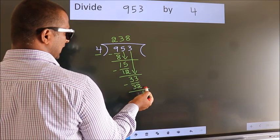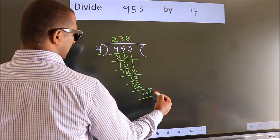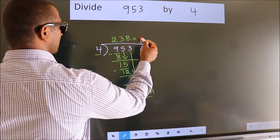No more numbers to bring it down. So, we stop here. This is our remainder. This is our quotient.